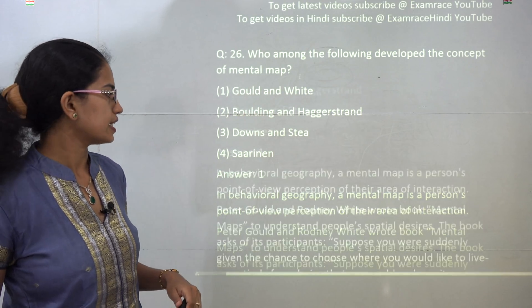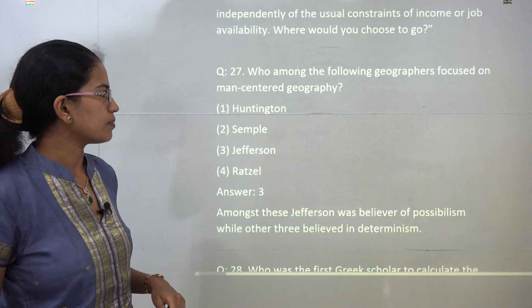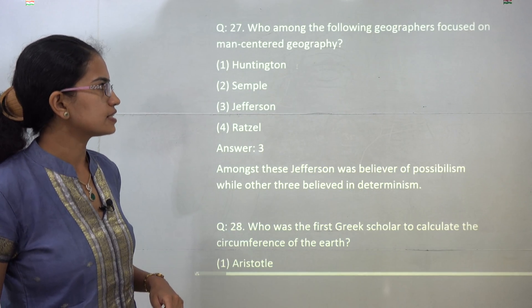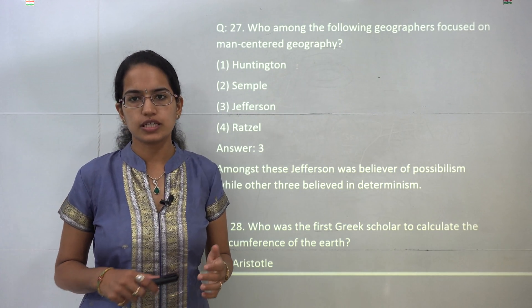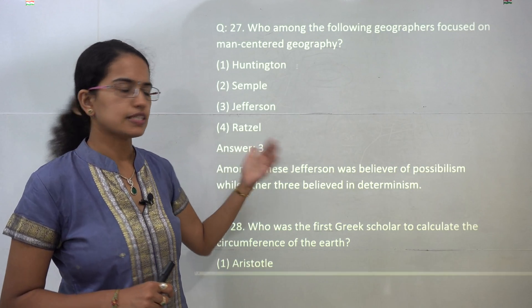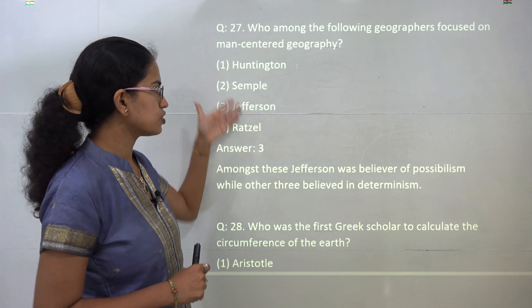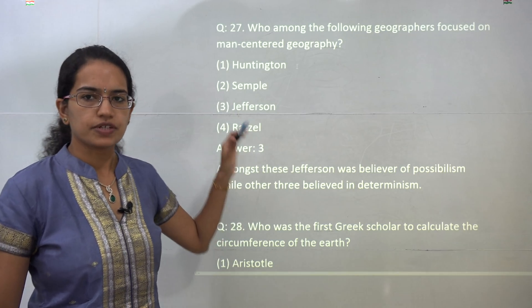The next question talks about men-centered geography, which is the idea laid down under possibilism. This was laid down by Jefferson — the rest of the three were determinists. So Jefferson would be the right answer.